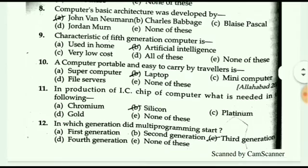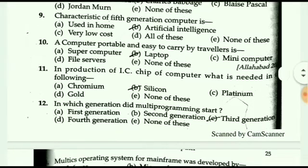Computer basic architecture was developed by John Von Neumann. Next question: what is a non-notable characteristic of the fifth generation computer? The answer is artificial intelligence.